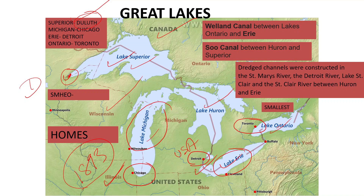This is all about the Great Lakes. The keyword to remember all five Great Lakes is HOLMES: H for Huron, O for Ontario, M for Michigan, E for Erie, and S for Superior. HOLMES equals the five Great Lakes.